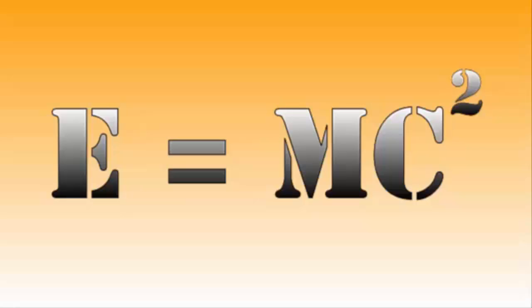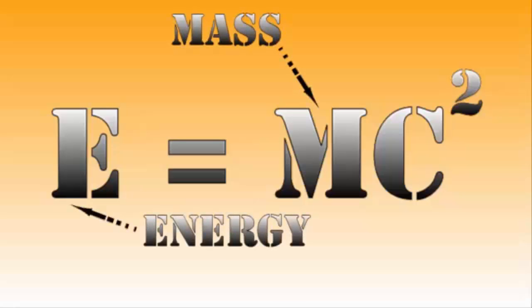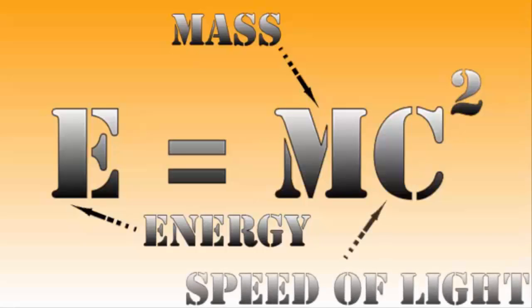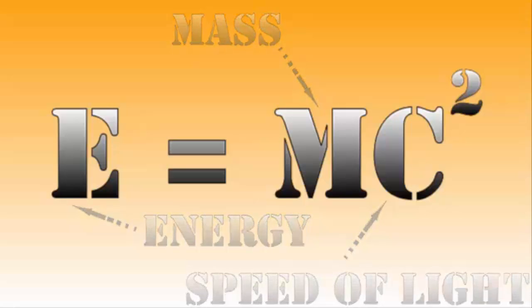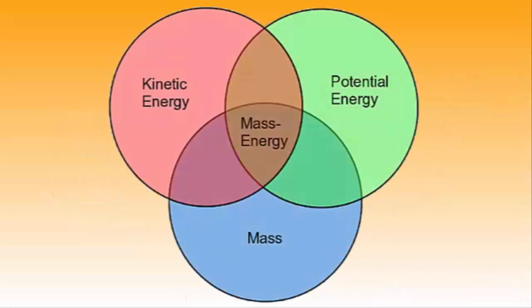First off, what this equation tells us is that there is a direct relation between energy and mass. Actually, it tells us that mass is a form of energy, since c, the speed of light, is a constant. So without going into it too much, according to this equation we should regard mass as a solid form of energy.